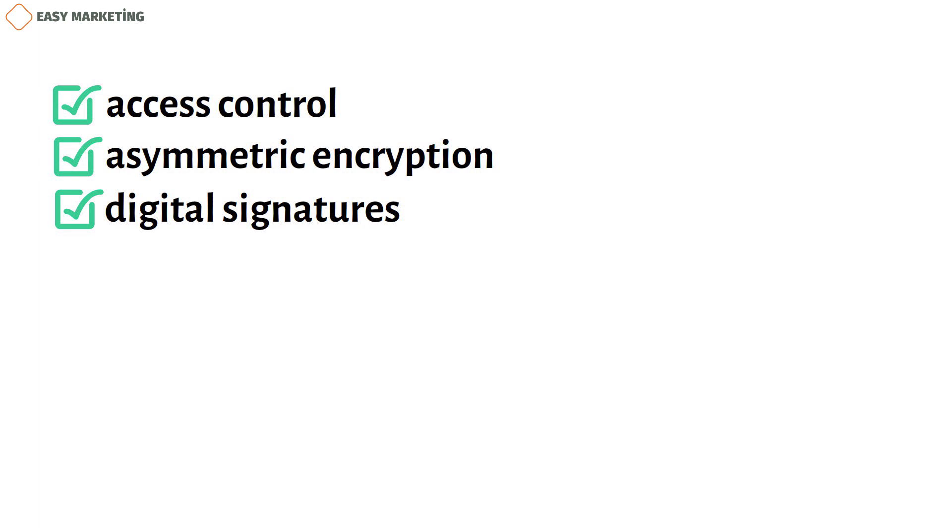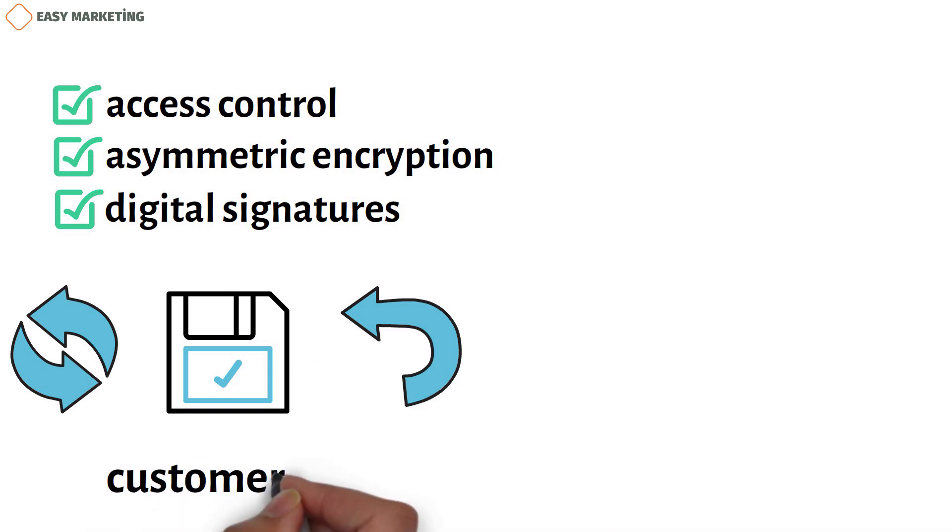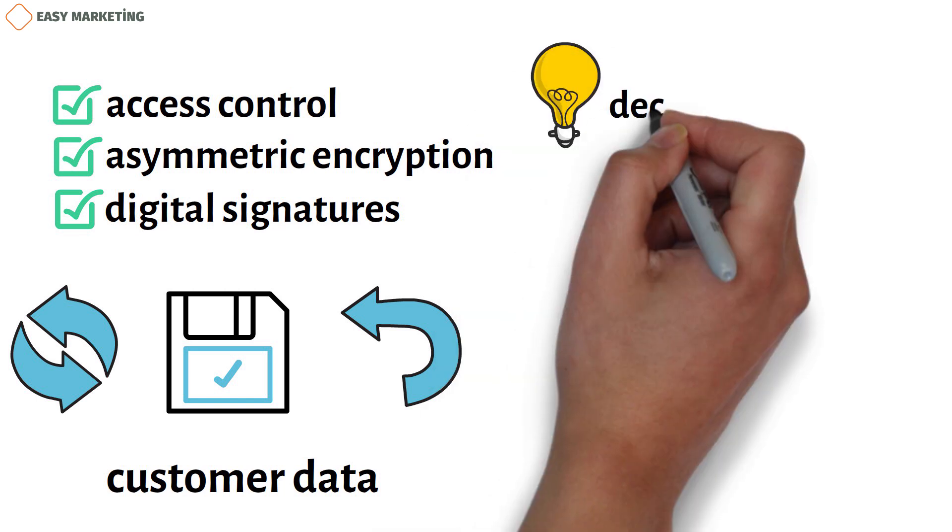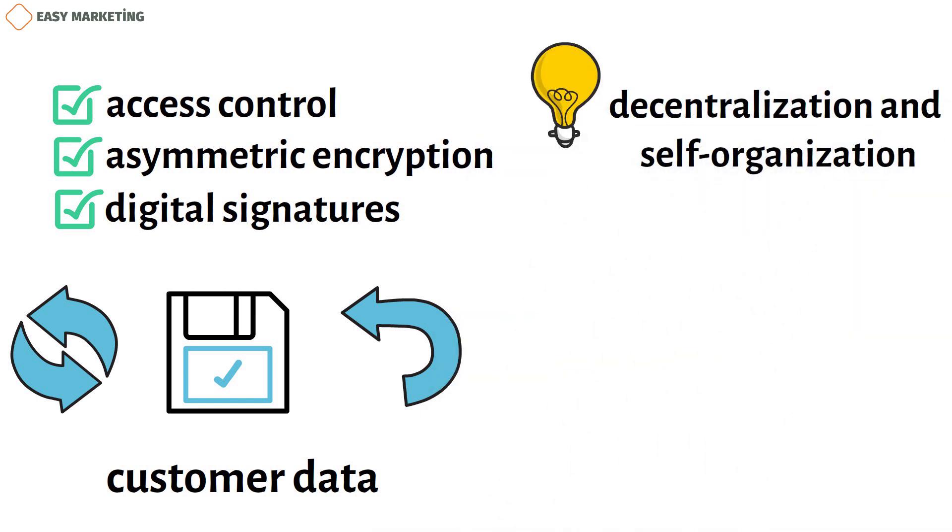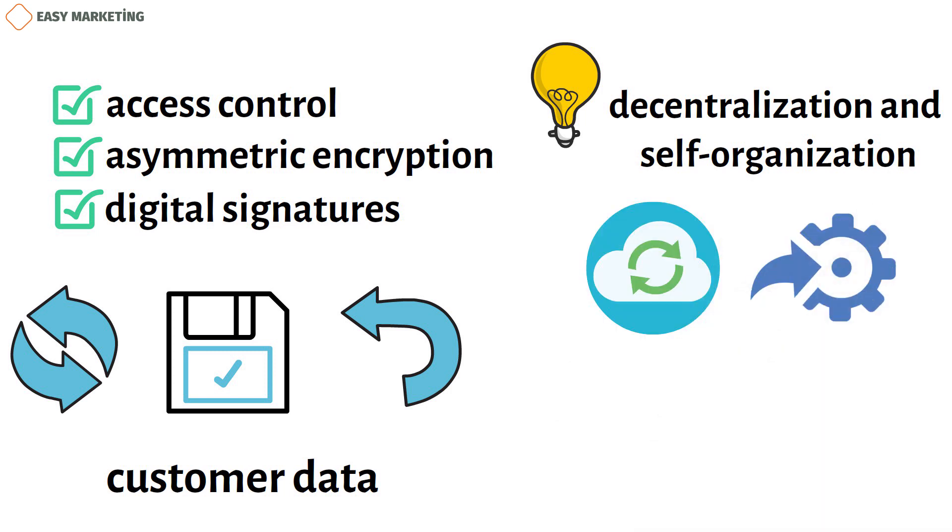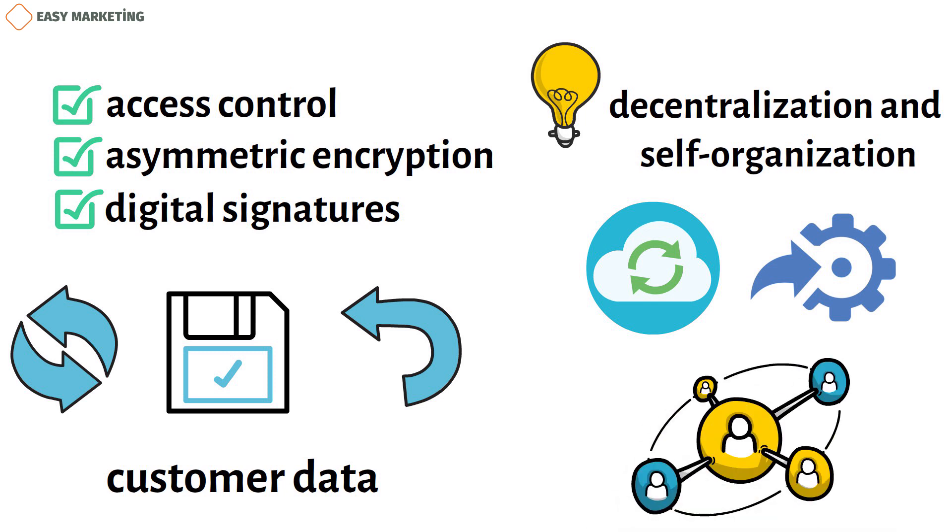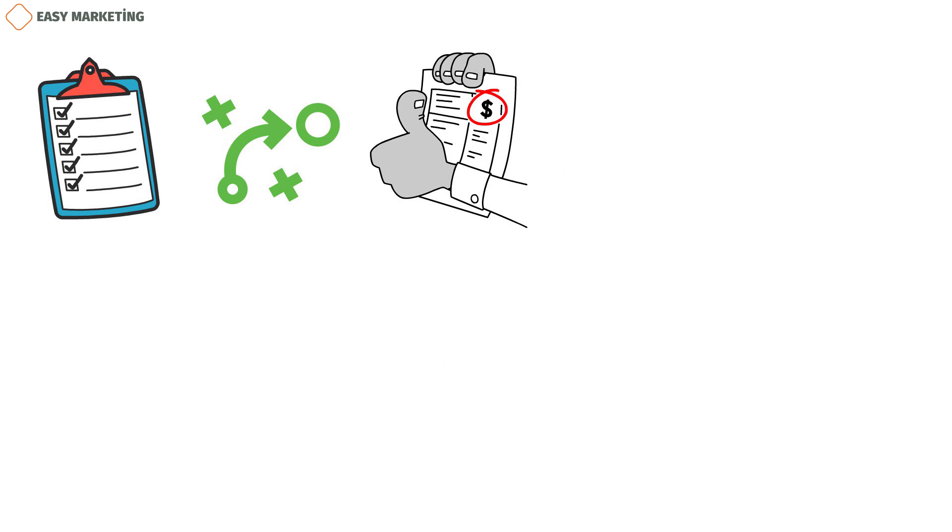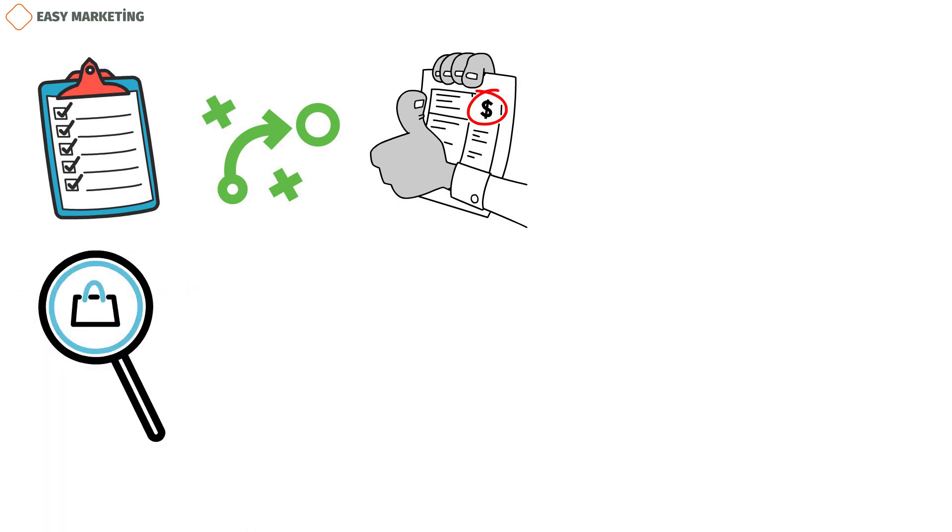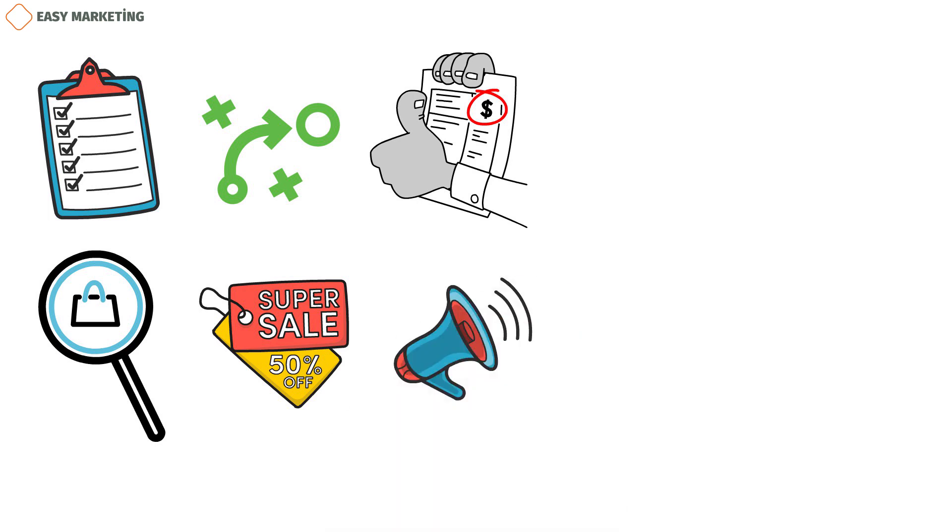Blockchain technology presents a novel approach to the decentralization and self-organization of an economic ecosystem, allowing for efficient synchronization and integration of data on marketing across network participants. Products listings, marketing strategies, price guidelines, findings from market research and analysis, discounts and other promotional perks, and adverts can all be included in the material.